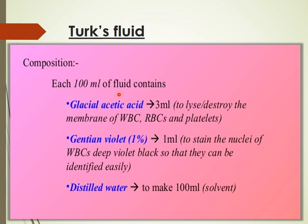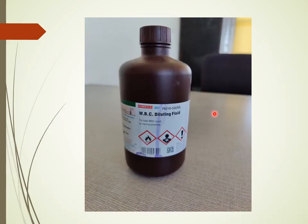The composition of Turk's fluid: each 100 ml contains glacial acetic acid (3 ml), which lyses and destroys the membrane of RBCs and platelets; gentian violet 1%, which stains the nuclei of WBCs violet-black so they can be identified easily; and distilled water as a solvent.